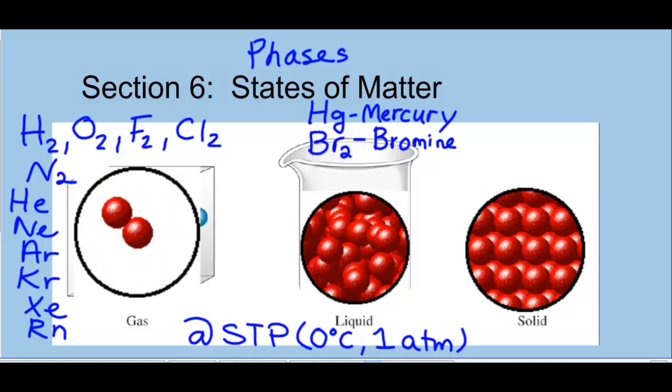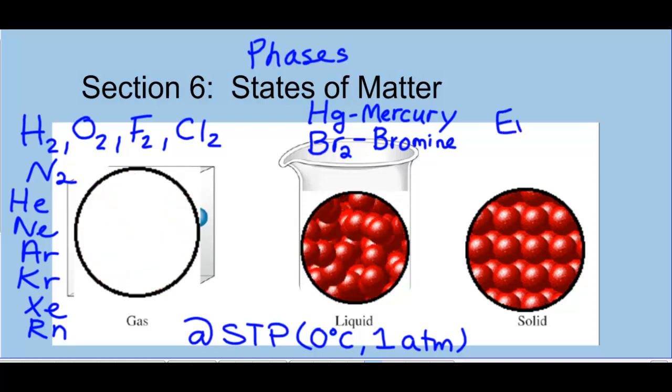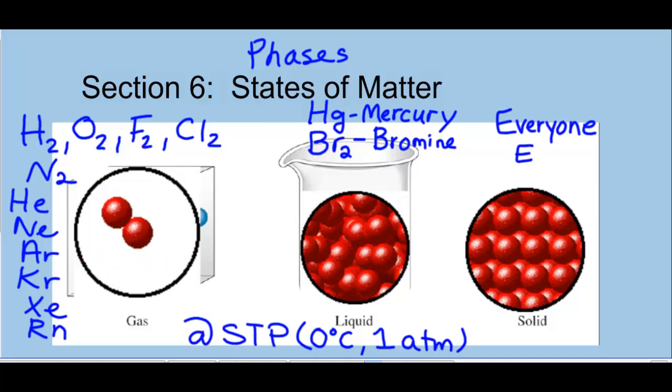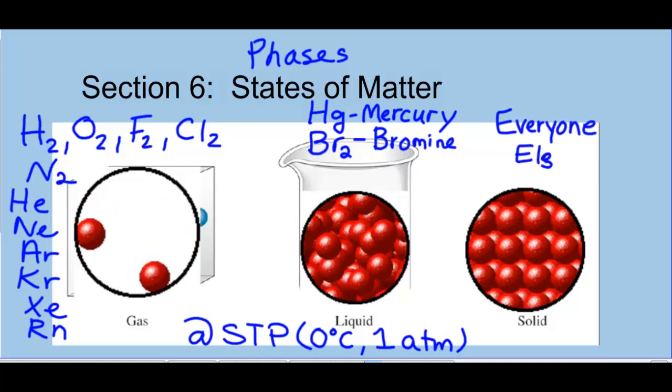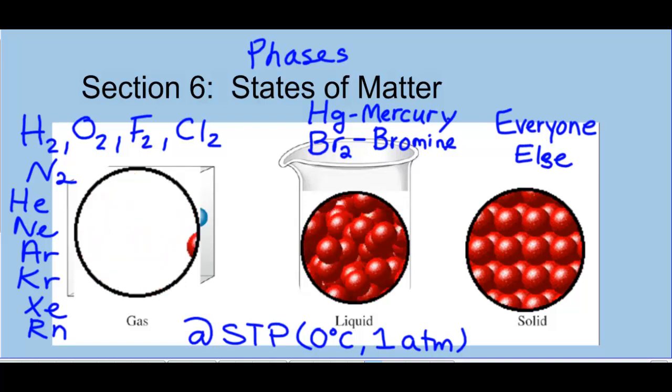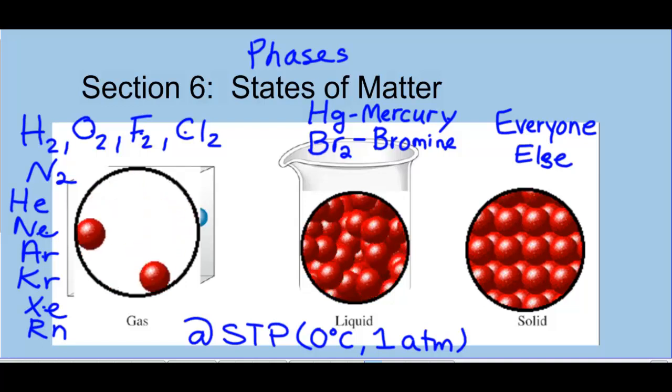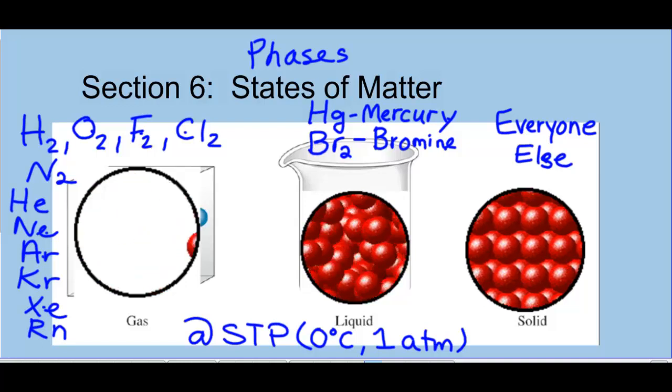Solids, there's the most of. Everyone else at STP is a solid. So it would kind of be silly for you to memorize who's a solid. So just memorize your two liquids, your 1, 2, 3, 4, 5, 6, 7, 8, 9, 10, 11 gases, and then everyone else is a solid at STP.